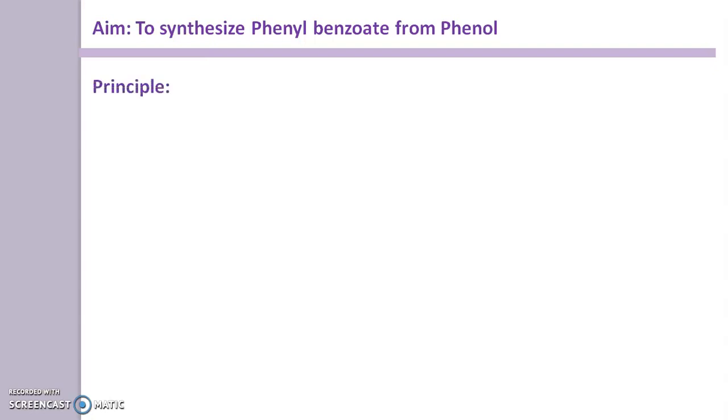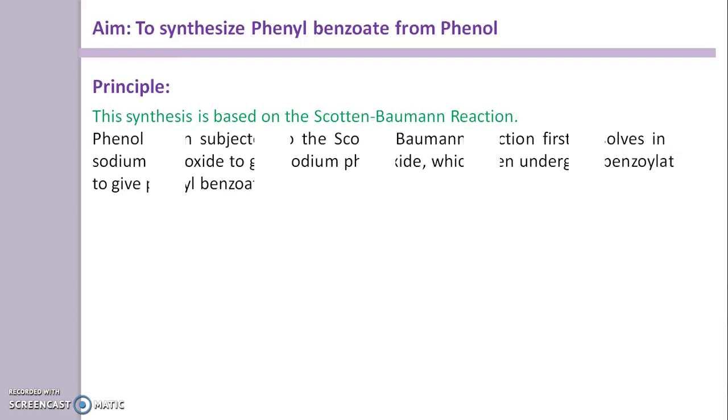The basic principle for this synthesis: This synthesis is based on the Schotten-Baumann reaction. Phenol, when subjected to the Schotten-Baumann reaction, first dissolves in sodium hydroxide to give sodium phenoxide. Then this formed sodium phenoxide undergoes benzoylation and gives phenylbenzoate.